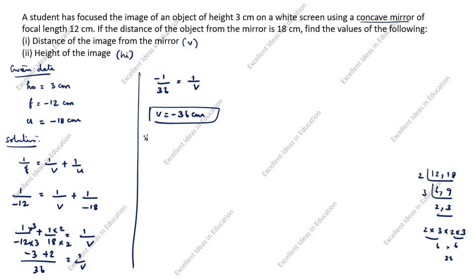For the second question, height of the image: we use the magnification formula. The magnification formula is minus v by u equals hi by ho. Here v is minus 36, so we put minus of bracket minus 36 divided by u which is minus 18, equals hi by ho.